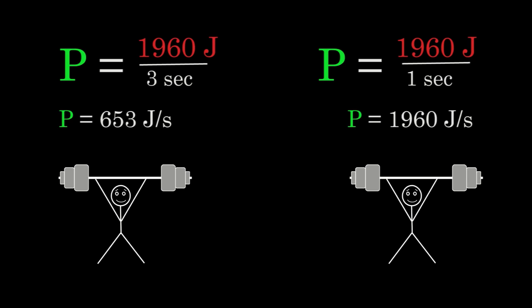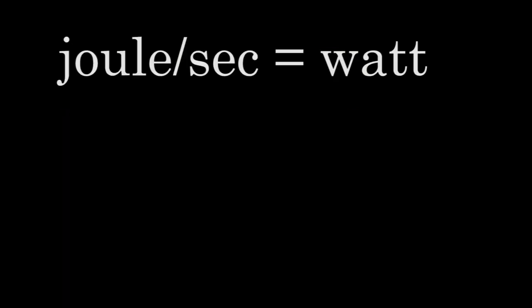And the power output of the weightlifter on the left during his lift is 653 joules per second. A joule per second is named a watt, after the Scottish engineer James Watt. And the watt is abbreviated with a capital W.